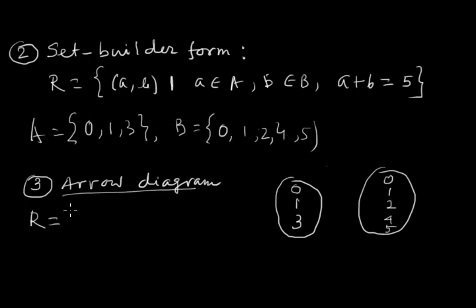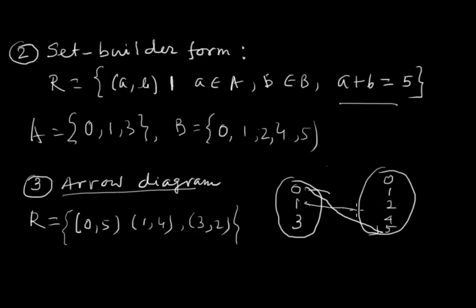What are the relations we got? R as ordered pairs we got as per A plus B equals 5: (0,5), (1,4), (3,2). We represent this in an arrow diagram as 0 to 5, 1 to 4, and 3 to 2.